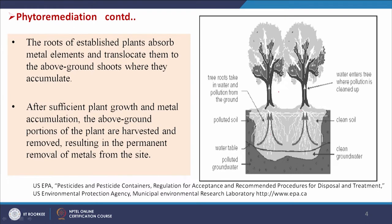The roots of established plants absorb metal elements and translocate them to the above-ground shoots where they accumulate — either in shoots or leaves. After sufficient plant growth and metal accumulation, the above-ground portions are harvested, resulting in permanent removal of metals from the site. The metal moves from the site into the biomass, so this biomass must be handled with more precaution.